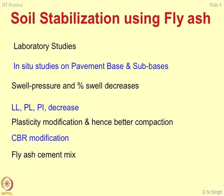The swelling pressure of the soil should decrease and percentage swelling should decrease. Liquid limit, plastic limit, and plasticity index should decrease — in other words, the system becomes more workable. When you modify the plasticity of the material, it can be compacted very easily. Stabilization can be achieved by compacting the soil mass or by adding additives like fly ash. You can change the plasticity of the material and hence achieve better compaction.